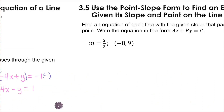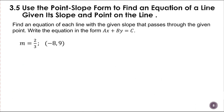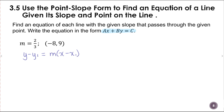Here is the next example. We're going to find the equation of the line with a given slope passing through the point negative 8, 9, and write it in the form ax plus by equals c. First I'll write out the formula: y minus y sub 1 equals the slope times x minus x sub 1. Then we substitute in, being careful with signs. For y sub 1 I substitute 9, two-thirds goes in for m, and then that's x minus negative 8, which is x plus 8.